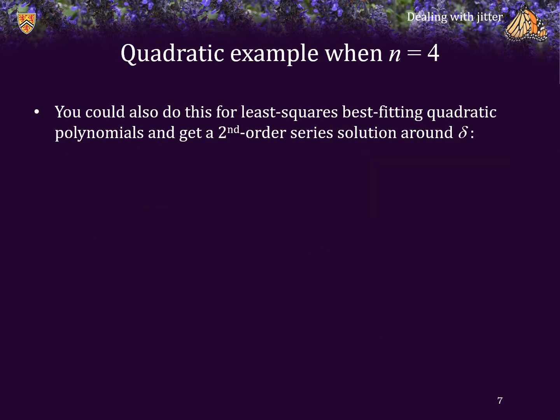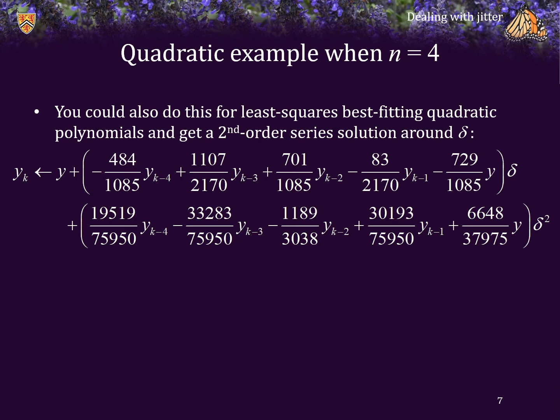You could also do this for least squares, best fitting quadratic polynomials. And using Maple, you could get a second order series solution around delta. So here it is. Again, all those coefficients would be calculated at compilation time. So this is actually going to be reasonably efficient. And if delta is small, once again, you can, of course, simply use the first order approximation. So get rid of the second term. So that would be even more efficient and still reasonable if delta is less than 0.1 in absolute value.